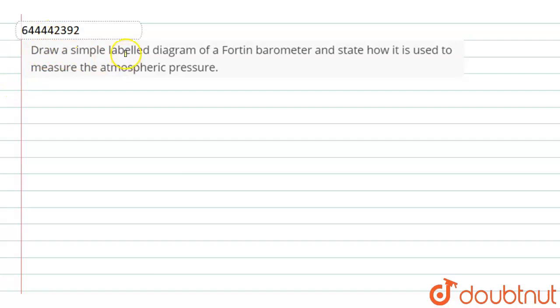Draw a simple and labeled diagram of the Fortin barometer and state how it is used for the measurement of atmospheric pressure.